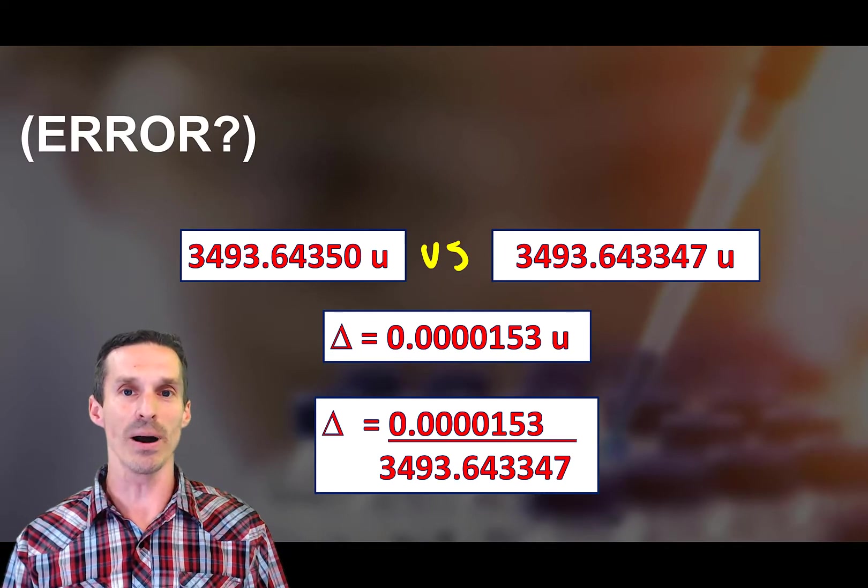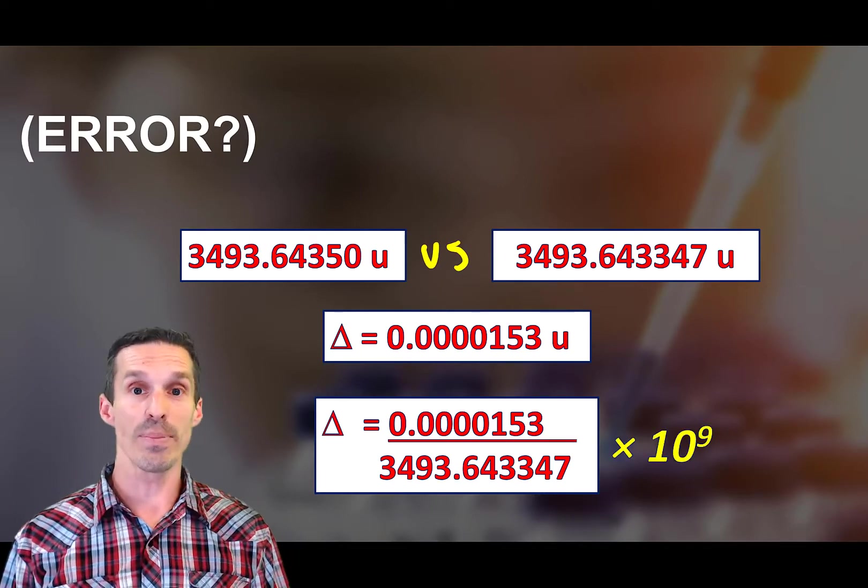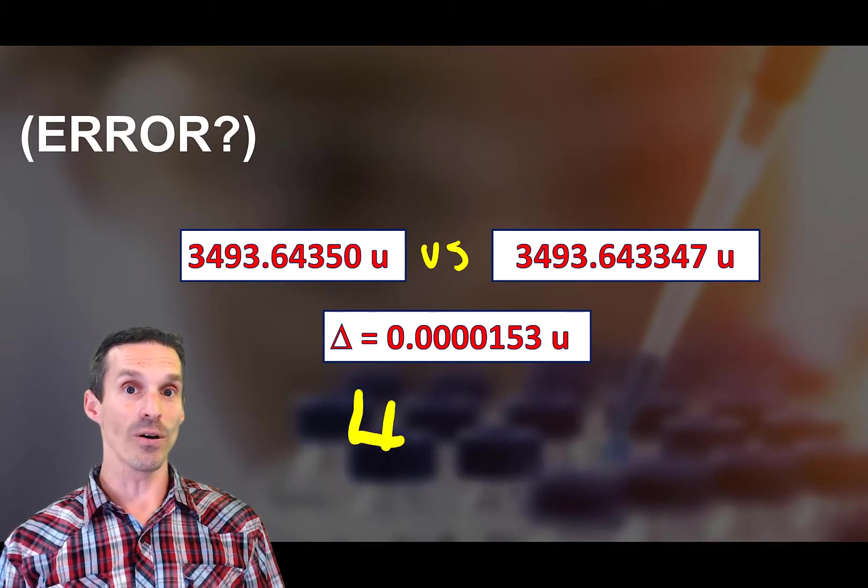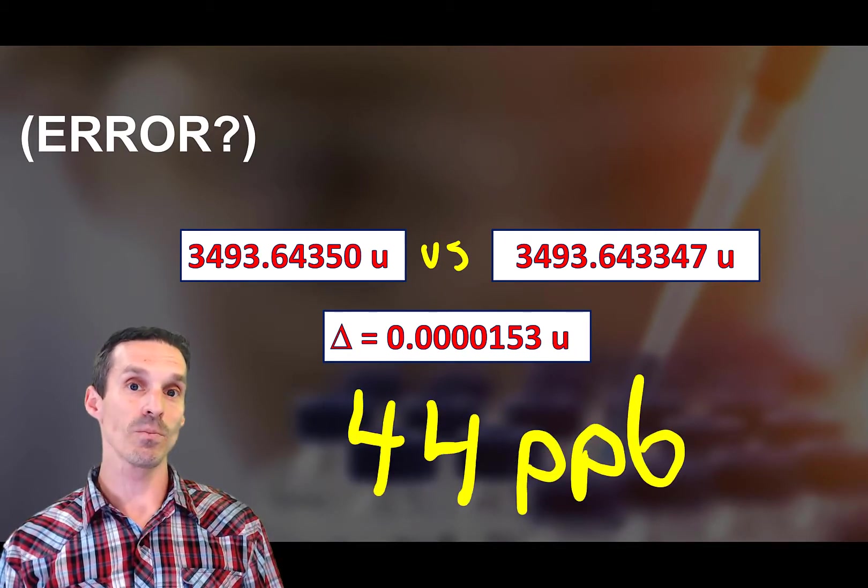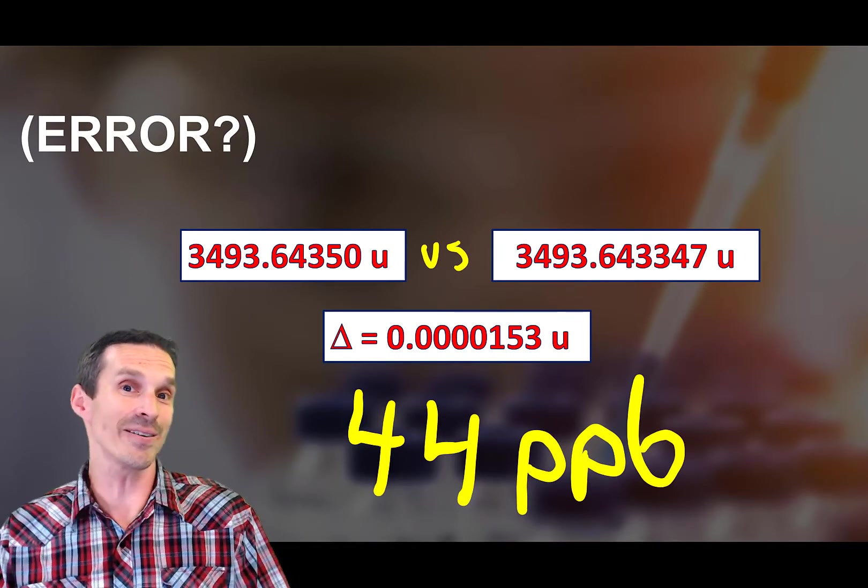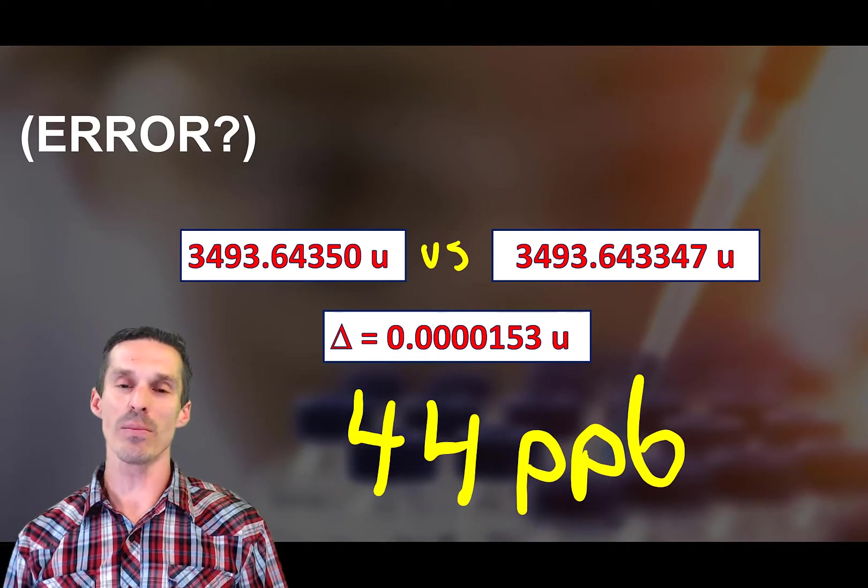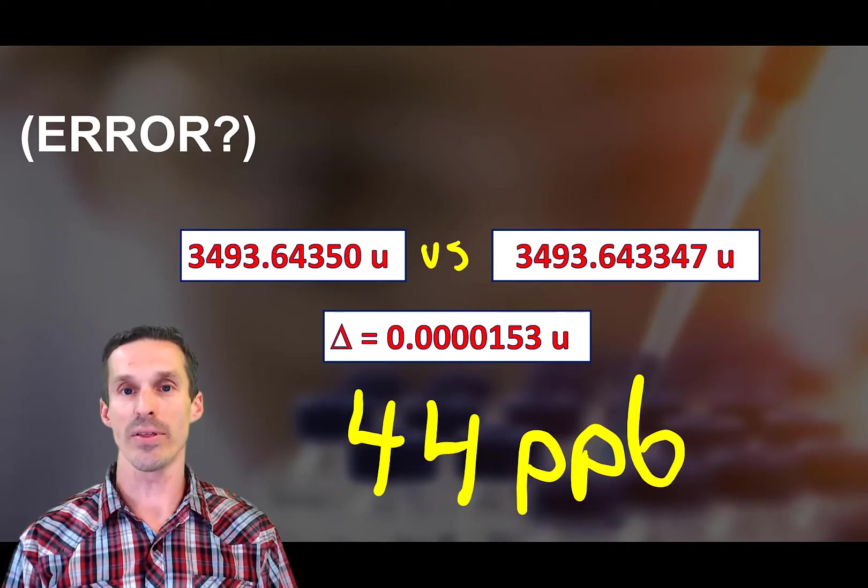So just take the absolute difference divided by it, honestly it doesn't matter which one you divide by, but I'll just pick the one that I have. Then you get a difference of about 44 parts per billion. Is that a big number? Is that a small number? Hard to tell. Well let's ask the question: can mass spectrometry actually measure things that are that small?